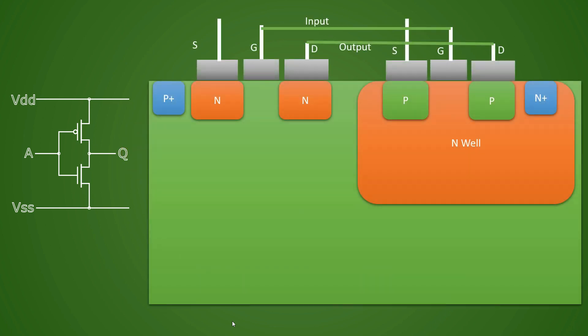Here we have taken the CMOS inverter layout to understand why we need tie cells. The gate oxide is thin and sensitive to voltage surges. Some processes do not even allow us to connect the gate directly to the power rails, because any surge in input voltage can lead to damage of the gate oxide — for example, an ESD event that can damage the gate oxide.